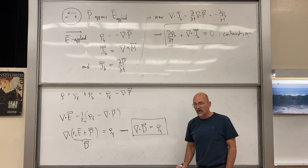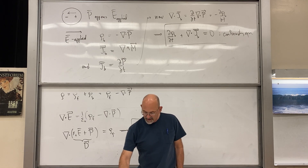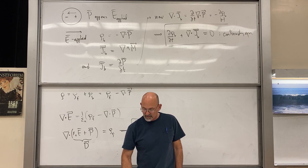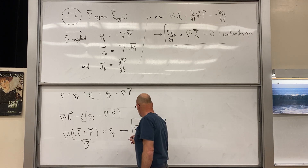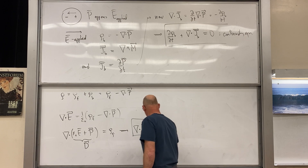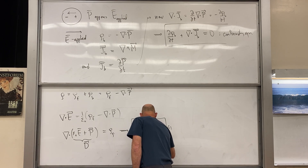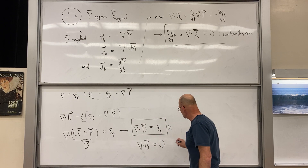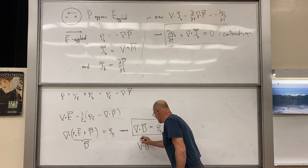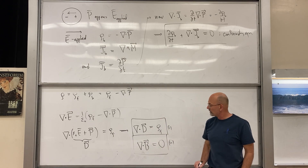The second Maxwell equation — divergence of B = 0 — is not going to change. There are still no magnetic monopoles. But now Faraday's law and Ampere's law both have to be dealt with in the context of matter.